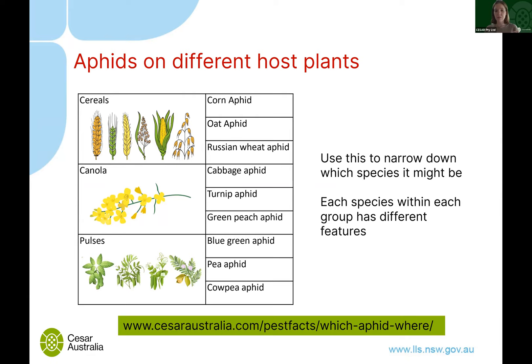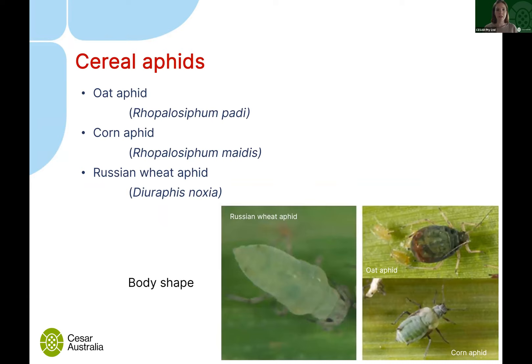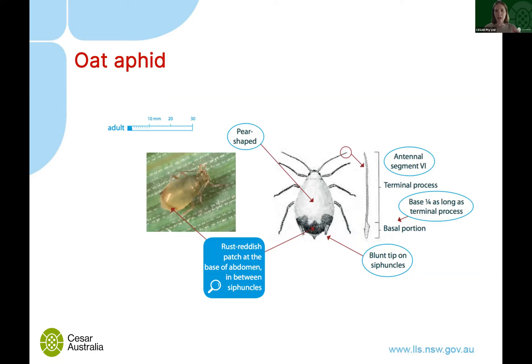There's an article on the CESAR website about this that I'll put in the chat afterwards. Looking at cereal aphids — oat aphids, corn aphids, and Russian wheat aphids are the most common. Superficially, body shape is the first thing that jumps out. The Russian wheat aphid has a spindle-like shape; the oat aphid has a big round body; and the corn aphid has a kind of rectangular shape. So just looking at body shape on a cereal crop is one way to start differentiating.